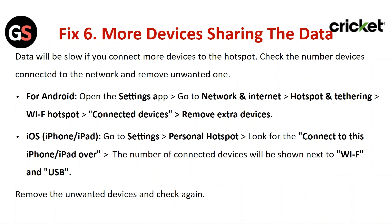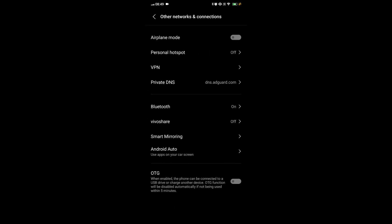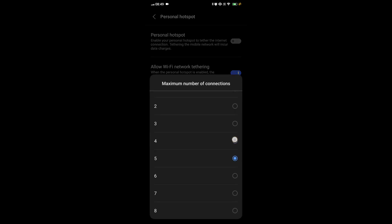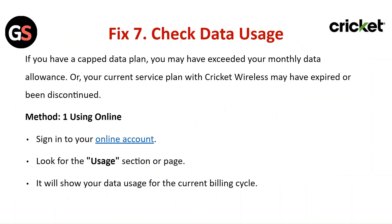Fix six: More device sharing. Data will be slow if you connect too many devices to the hotspot. Check the number of devices connected to the network and remove unwanted ones. For Android, open the Settings app, go to Network and Internet, then Hotspot and Tethering, click on Wi-Fi Hotspot, tap on connected devices, and remove extra devices. For iOS, go to Settings, then Personal Hotspot — the number of connected devices will be shown next to Wi-Fi and USB. Remove unwanted devices and check again.